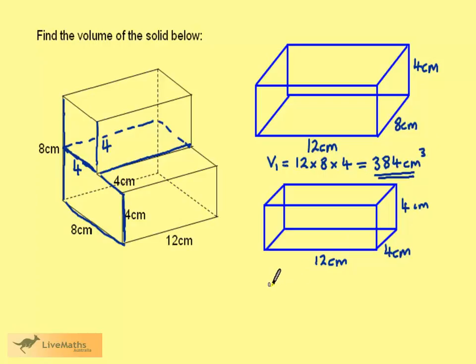The smaller one, which we'll call V2, is 12 times 4 times 4. And this gives us 192 cm cubed.